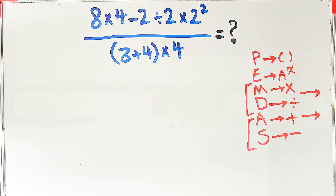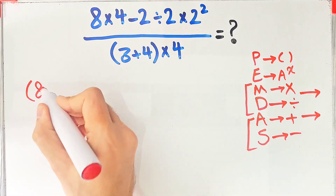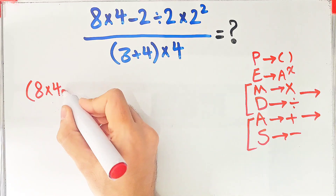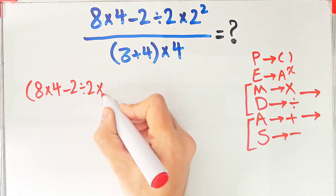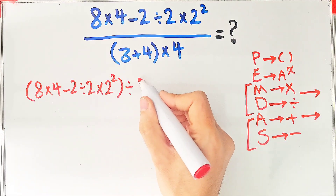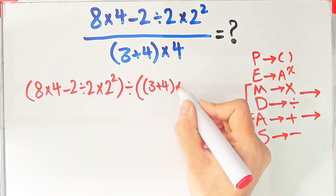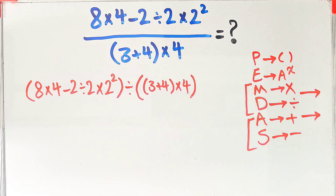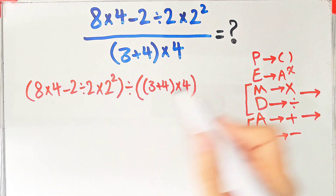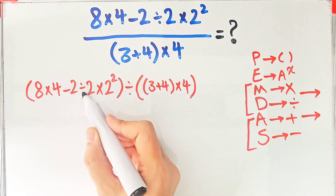Let's simplify this question and solve it together. In the numerator we have eight times four, then minus two divided by two, times two to the power of two. In the denominator we have three plus four, then times four. According to the PEMDAS rule, first we simplify the parentheses. Inside the first parentheses we have multiplication, subtraction, division, and an exponent.